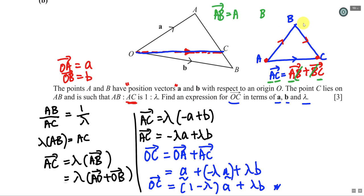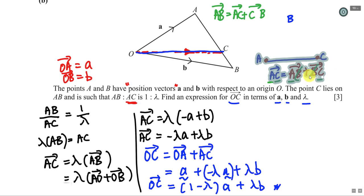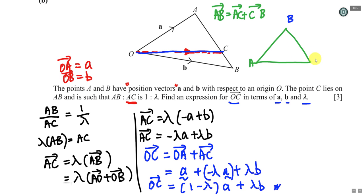Using the same logic without a diagram: to find AB, write A as the first letter, B as the last, and choose any middle letter — for example, going via C gives AB = AC + CB. No matter how the triangle looks, this always works. This is the triangle law of vector addition, and understanding it is essential for most vector questions.